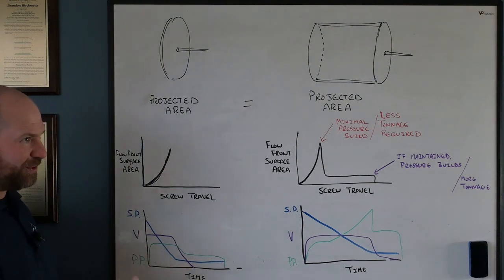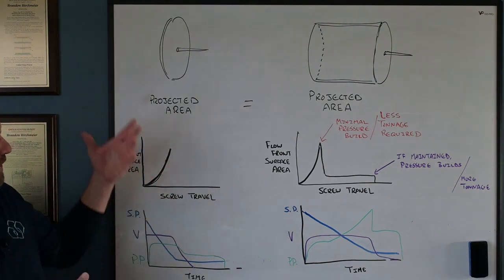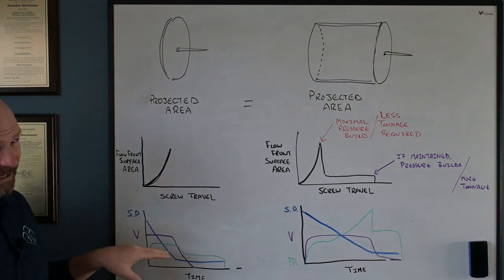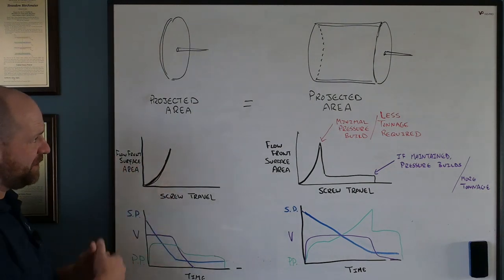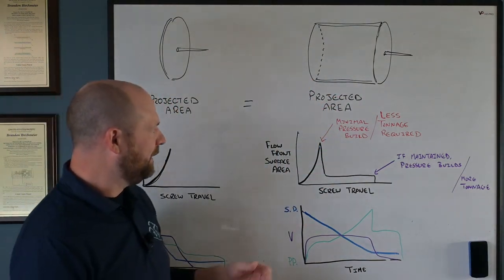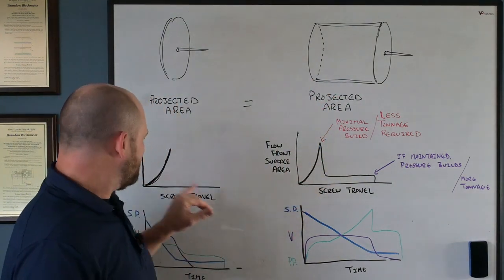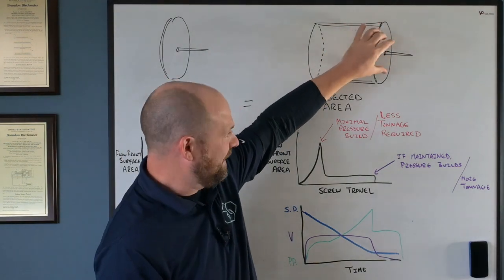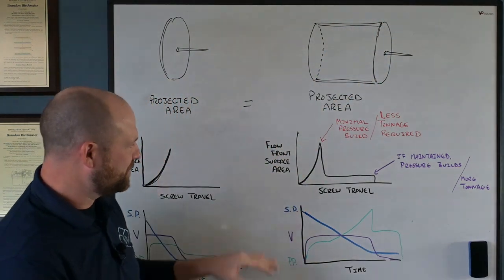So again, pressure versus the tonnage needed to keep this mold closed. I'm not building a lot of pressure because of this relationship. Now, if I go over to my container bucket example, again, up front, I have a similar relationship, right? I am filling, going from the small gate to the large bottom surface of the circle.